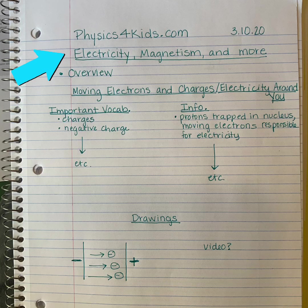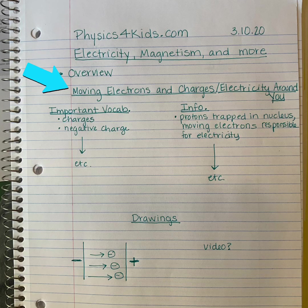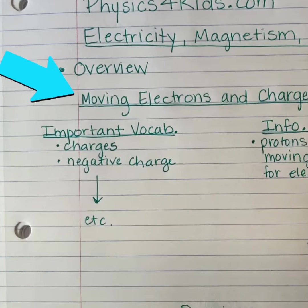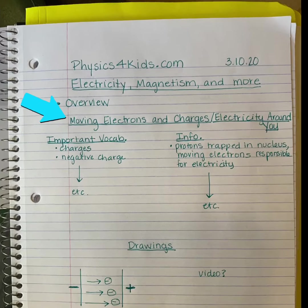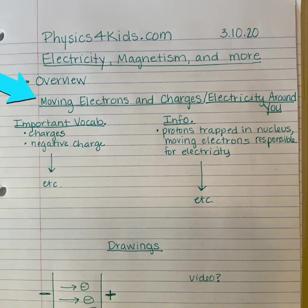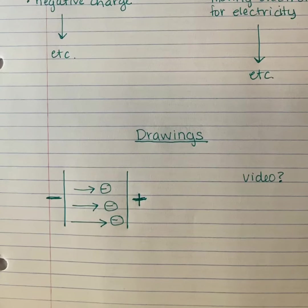Underline that title. Next, put the tab that you're working on — the first one you'll go to is the overview. Then put the main headings for each webpage and split up your page into important vocab, info, and drawings.